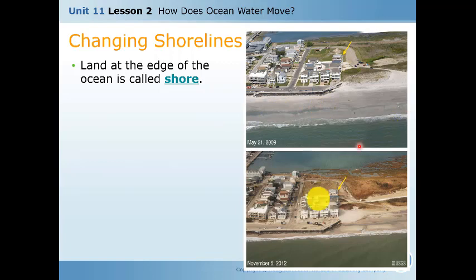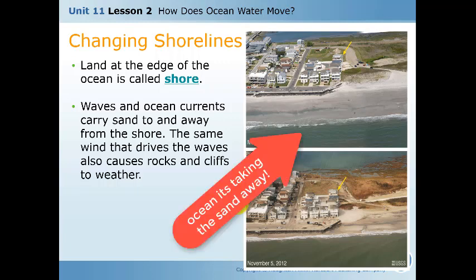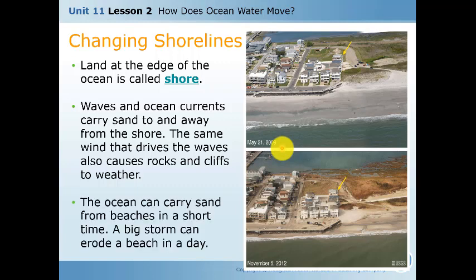Waves and ocean currents carry sand away from the shore or deposit it in another place. The ocean can carry sand from beaches in a short time, and a big storm can erode the beach in a day — that is the big effect of hurricanes and storms.